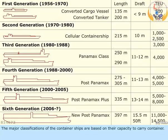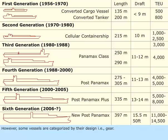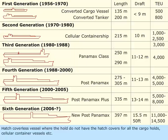The major classifications of container ships are based on their capacity to carry containers. However, some vessels are categorized by their design, i.e., gear. A vessel may have its own container handling gear like cranes and derricks. Other design types include hatch coverless vessels, where the holds do not have hatch covers for all cargo holds, and cellular container vessels.